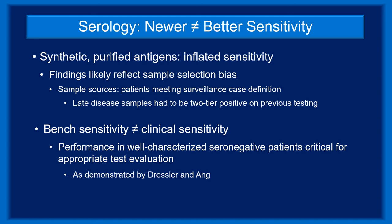Patients do not arrive at the office with positive results in hand — they present with history and exam findings. Clinicians may recognize disease patterns that make a Lyme diagnosis more likely and choose to support their clinical impression with EIA and Western blot results. However, studies by Dressler, Ang, and others clearly demonstrated that many well-characterized patients are seronegative. Therefore, the sensitivity seen in the controlled research environment is unlikely to perfectly carry through to an uncontrolled clinical setting. To accurately assess clinical sensitivity, a test's performance would need to be evaluated in a well-characterized patient population that includes patients with seronegative disease.